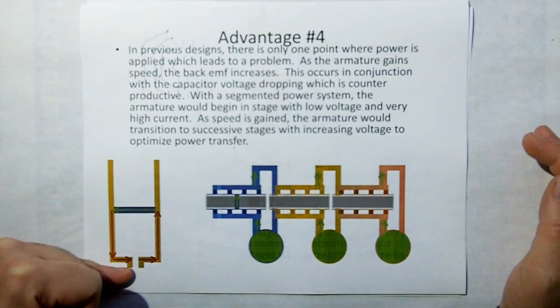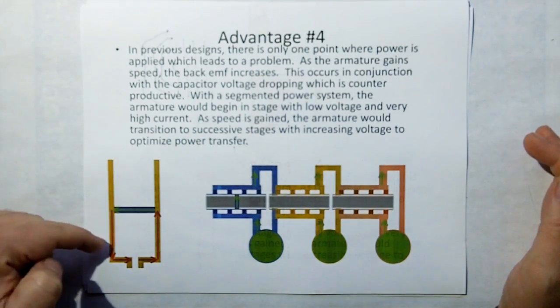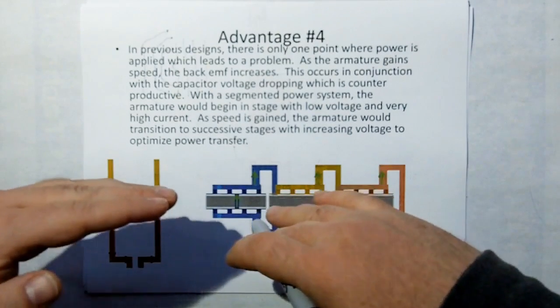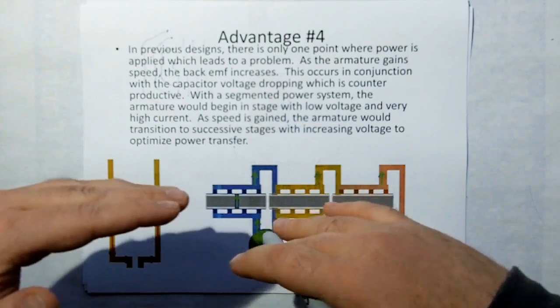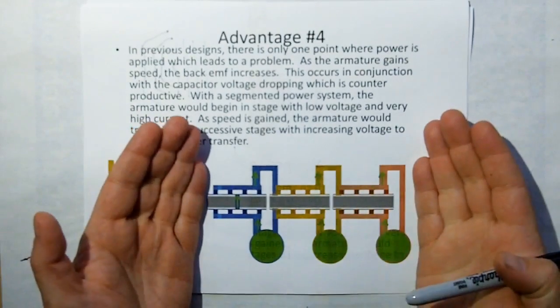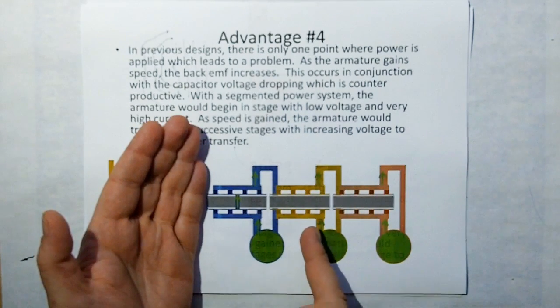And also in the previous designs, you only get one power supply to feed the entire shot. And therefore, what happens typically, you charge up a capacitor and you dump it in here. Well, as the armature starts gaining speed, your capacitor starts going down in voltage. And so you've got opposing problems going on.